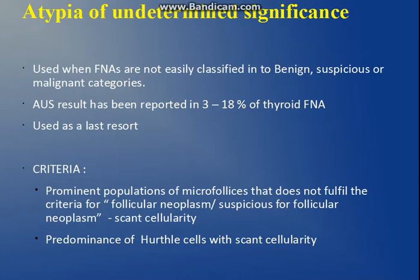The third category is Atypia of Undetermined Significance (AUS). This is used when FNAC of the thyroid is not easily classified into benign, suspicious, or malignant categories. It should be reported in only 3 to 18% of cases and should be used as a last resort — not in a case of confusion. It has specific criteria for its use.